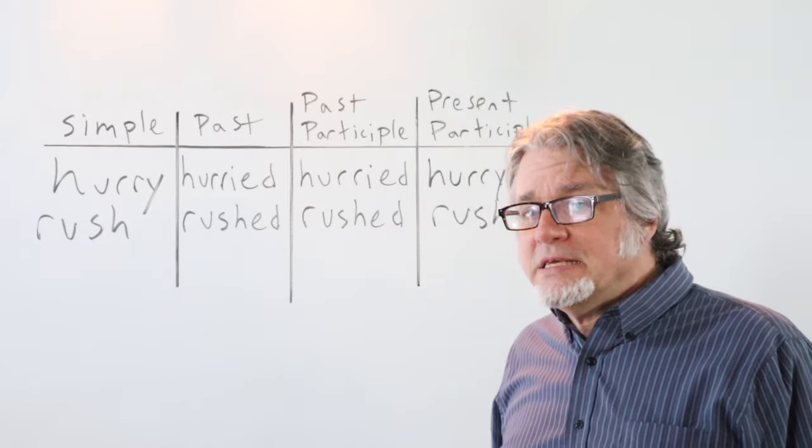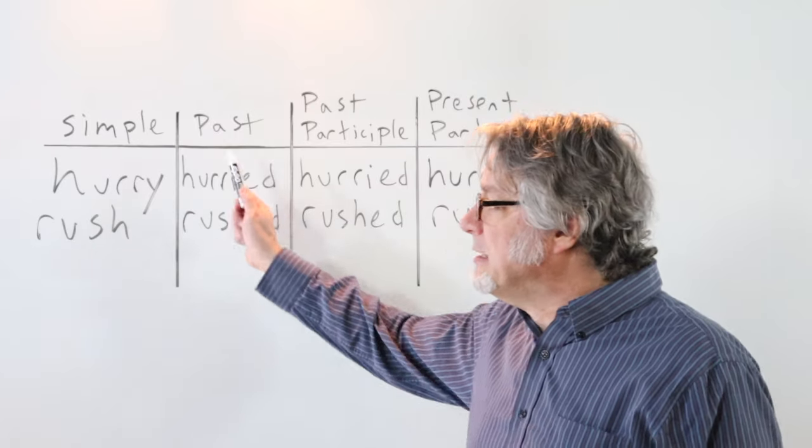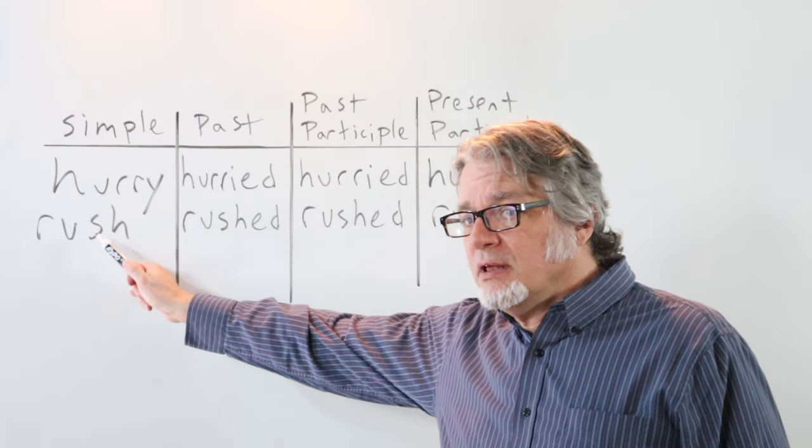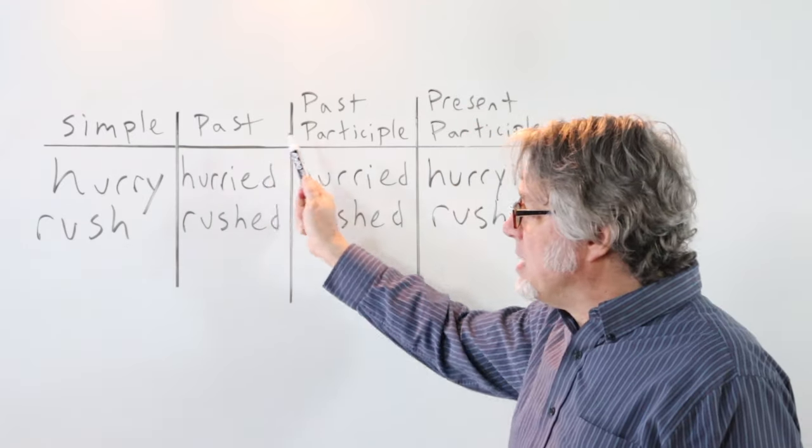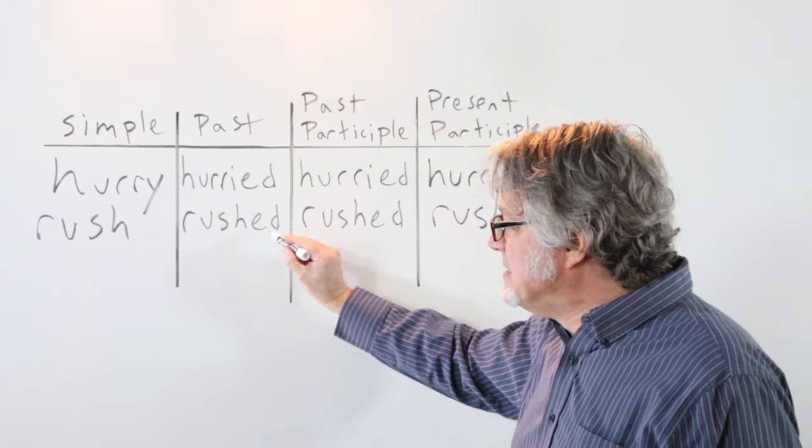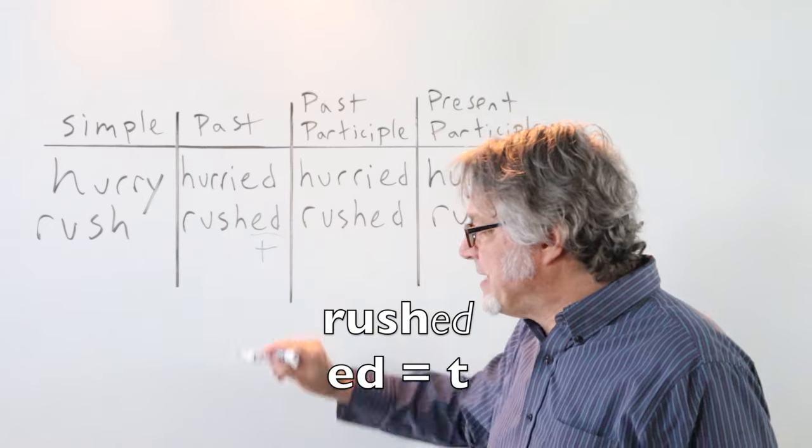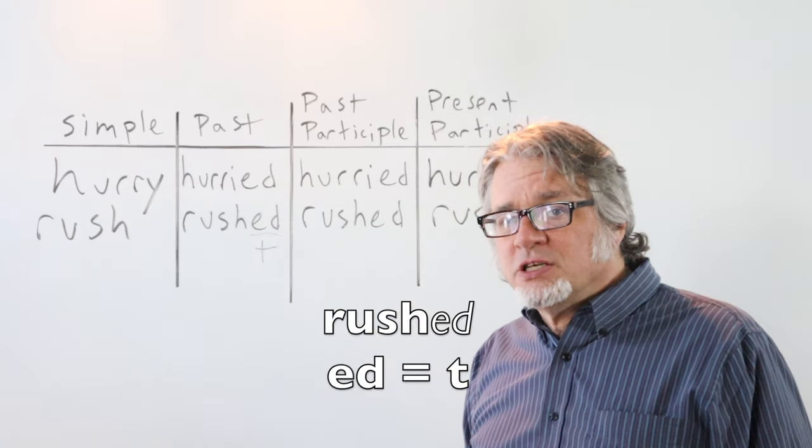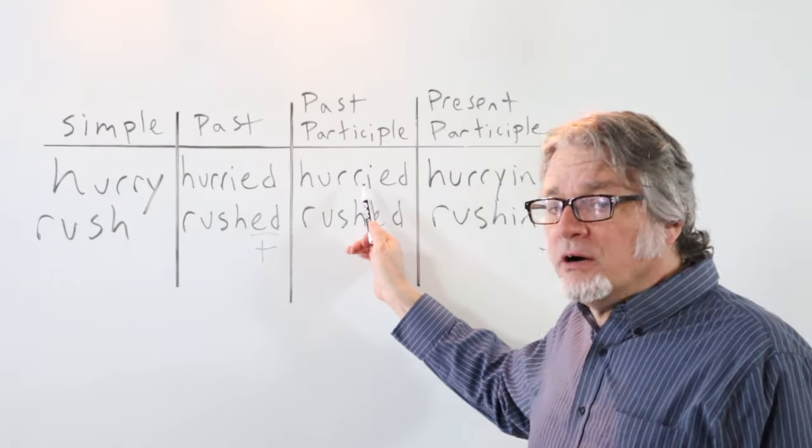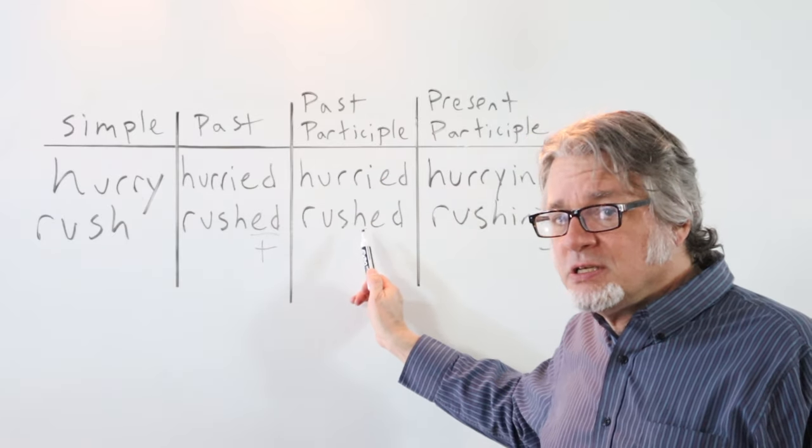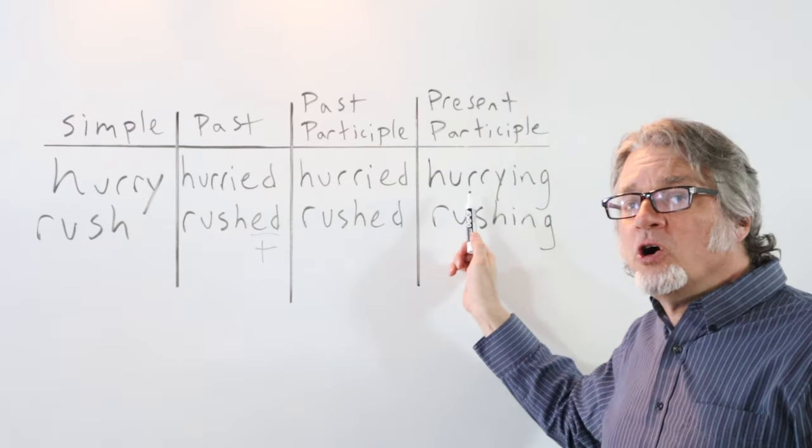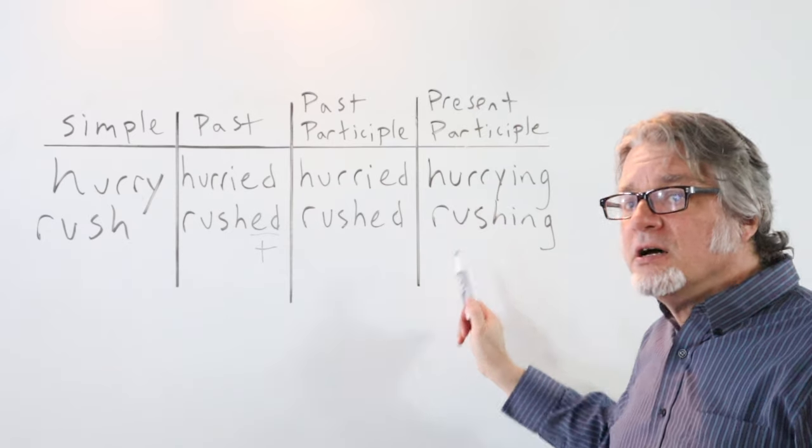The simple forms for these verbs are hurry and rush. The past tense forms are hurried and rushed. This ed ending has a t sound, rushed. The past participles are hurried and rushed, and the present participles are hurrying and rushing.